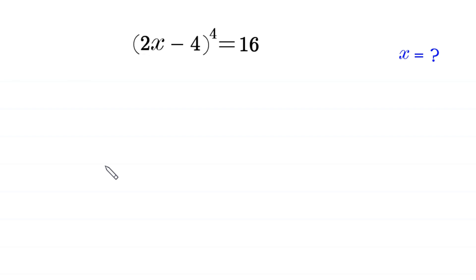Hello, welcome to How to Solve this very nice algebra equation: (2x minus 4) to the power 4 is equal to 16. We need to find all possible values of x. So, let's start.